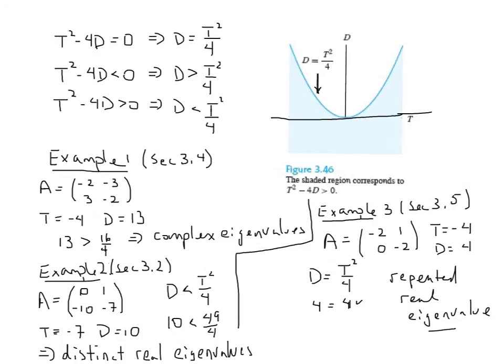On the next page, I've taken a picture from our textbook and actually created a real plane where one axis is the trace axis, the other axis, the vertical axis, is the determinant axis. So every point in this plane would correspond to some specific value of the trace and some specific value of the determinant.